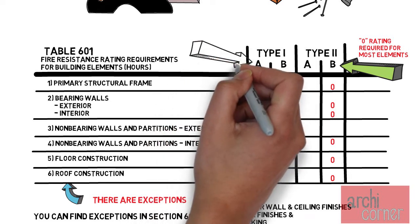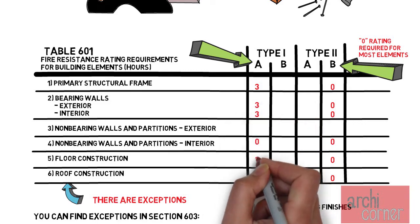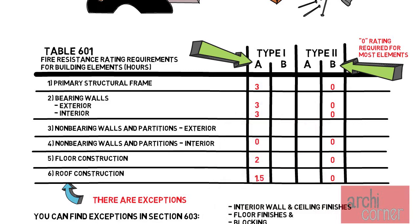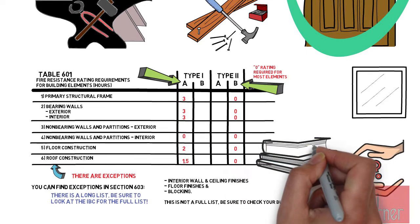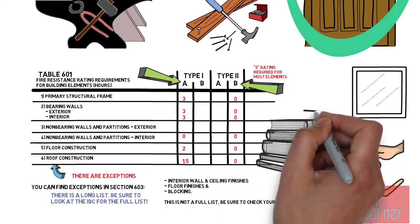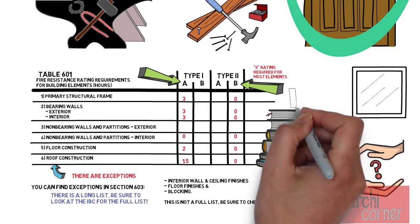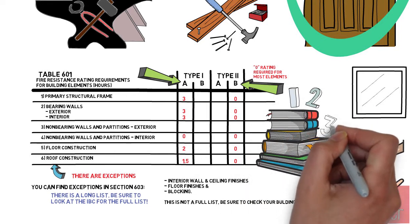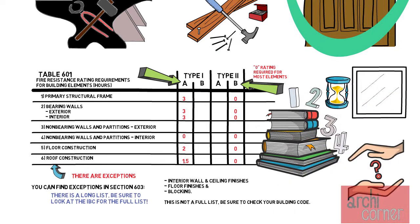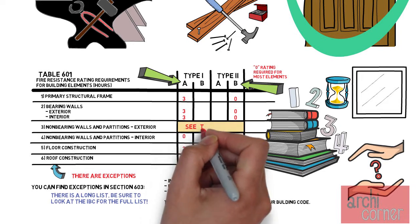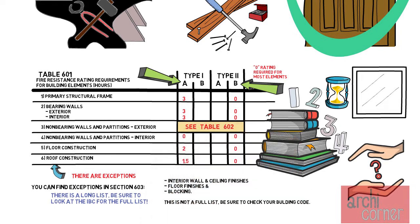On the opposite end you have a type 1A building, where almost all of the elements need to be rated. Many of these systems can be built as 1, 2, 3, or 4 hour resistive ratings by looking over third-party books and literature that provide tested assemblies that meet the required ratings. You will notice that the exterior partitions are the only ones that do not have a rating associated with them in this table, and instead they reference a second table, table 602.